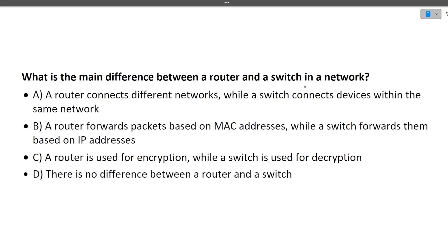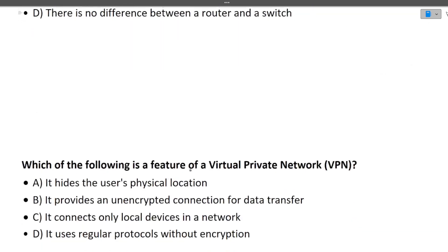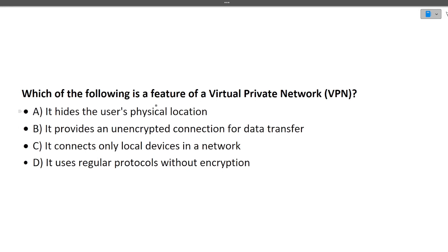The next question is: what is the main difference between a router and a switch? They work on different layers. A switch uses MAC addresses while a router uses IP addresses. The key distinction is: a router connects different networks, while a switch connects devices within a single network. That is the correct answer.